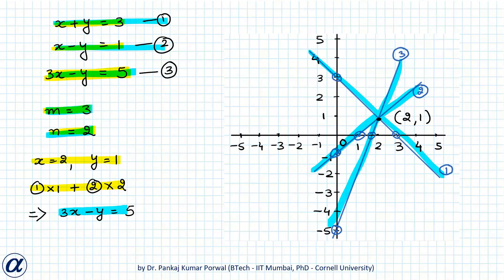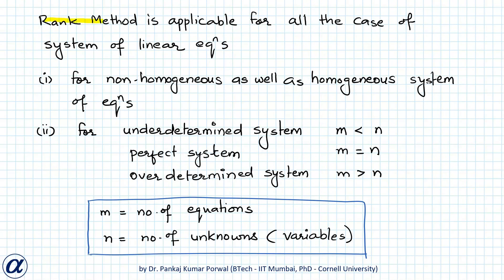For this we use the rank method, which is applicable for all cases of systems of linear equations — both non-homogeneous and homogeneous — and for all relationships between the number of equations and unknowns: under-determined (m less than n), perfect (m equals n), and over-determined (m greater than n). I will explain the properties of the rank method for all these cases one by one.